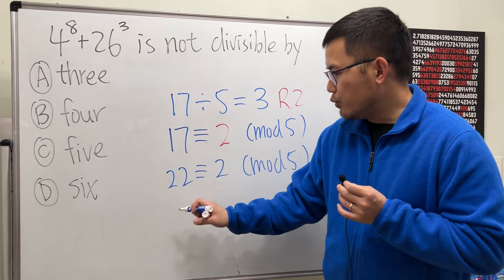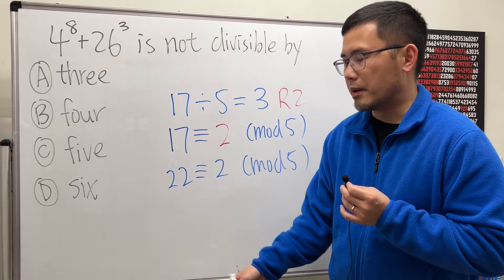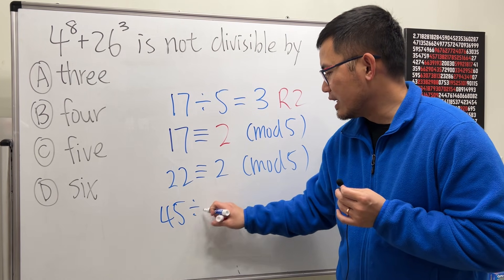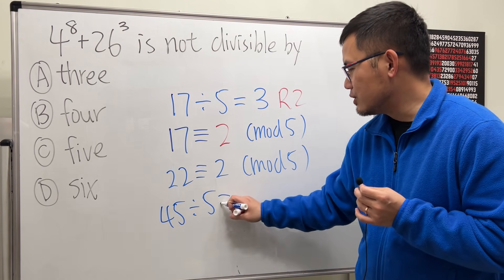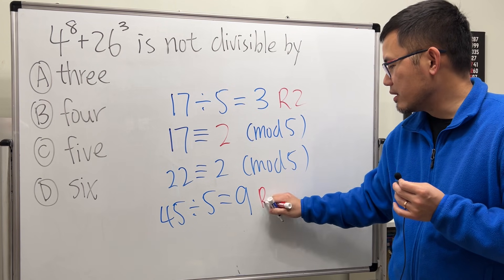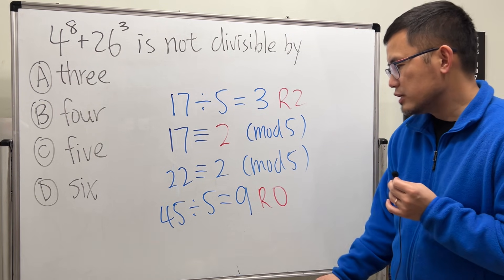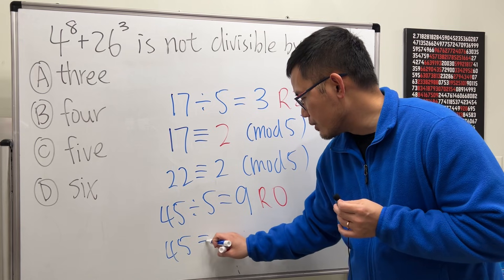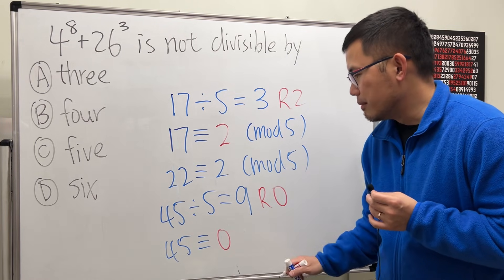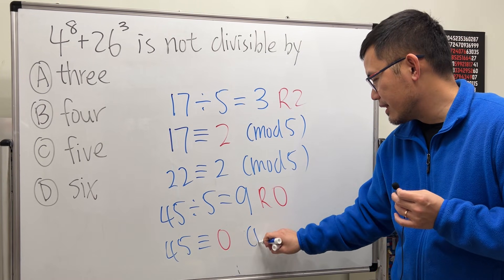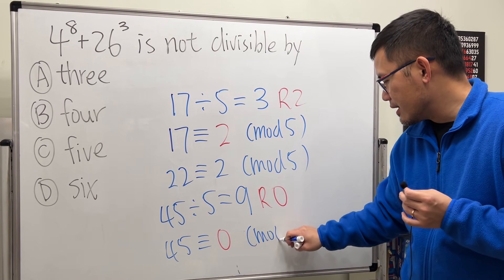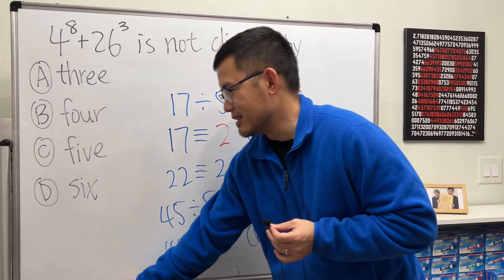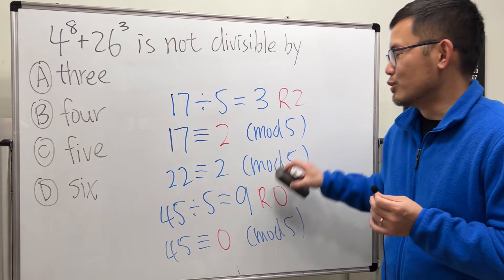And if you have a number that's divisible by 5 — let's say 45 — divided by 5, that's just 9 remainder 0. So based on this, we can say 45 is congruent to 0 mod 5. The quotient doesn't really matter in modular arithmetic.